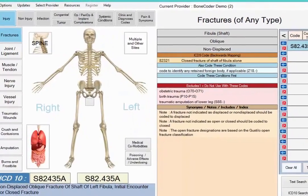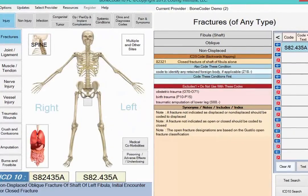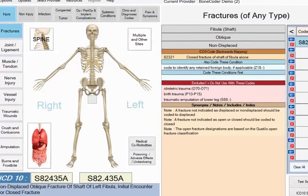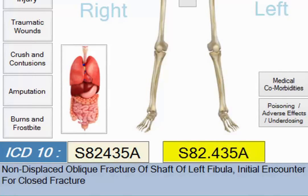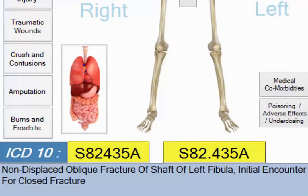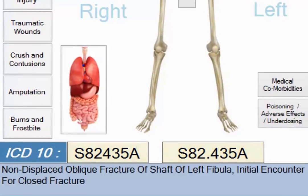Let's check out our results on BoneCoder. There's even more than you can see here, but let's start with the code on the bottom left of the screen. You see the code's official descriptor, so you know you have the proper code for your case. You'll see one box has the code with the decimal, and one has no decimal.